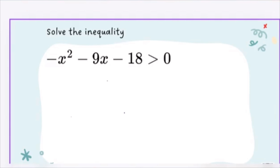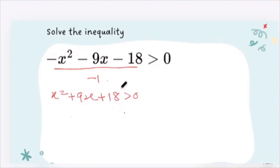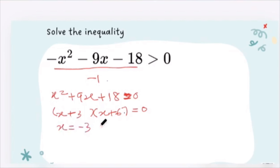For the next example: negative x squared minus 9x minus 18 is greater than zero. I want to factorize, so I divide through by negative one to get a positive coefficient of x squared, giving x squared plus 9x plus 18 is greater than zero. Factorizing using three and six: x plus three and x plus six, which means x equals negative three and x equals negative six.